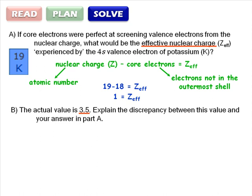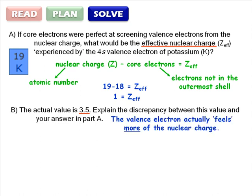Now for Part B. Our answer in Part A says that the 4s electron in potassium only feels a nuclear charge of 1, but Part B tells us it really experiences a nuclear charge of 3.5. So the valence electron actually feels more of the nuclear charge than we calculated. How can we explain this?